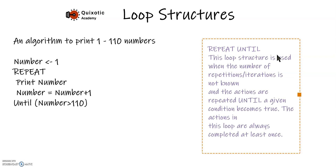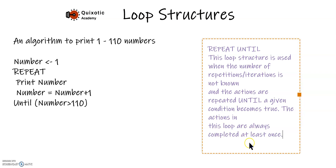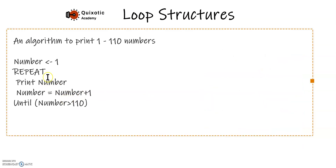The loop we just applied is called a REPEAT...UNTIL loop. This loop is used when the number of repetitions is not known, but you know the condition at which to stop. Importantly, the actions inside the loop are always performed at least once before the condition is checked — it will print number and increment it at least once.